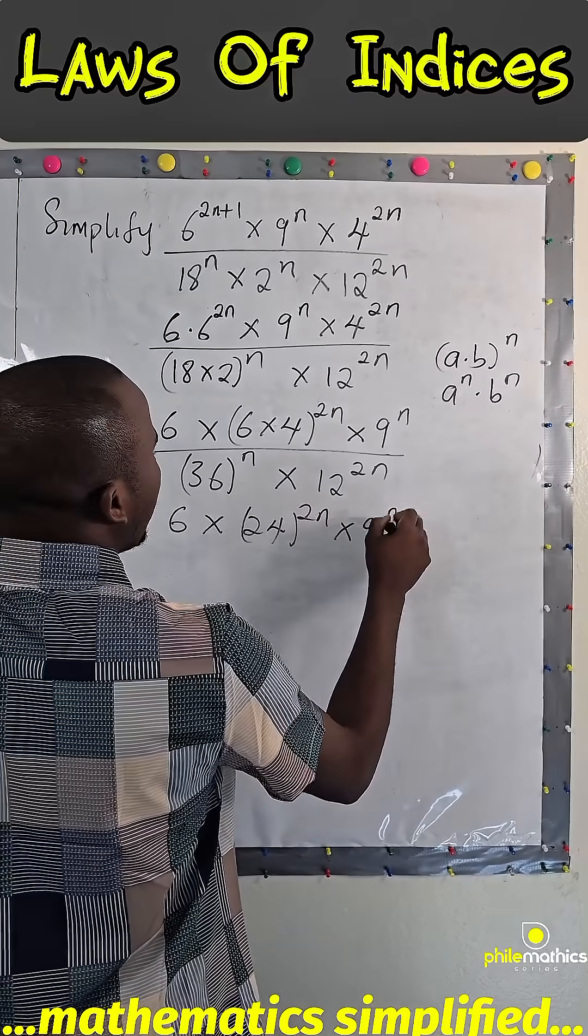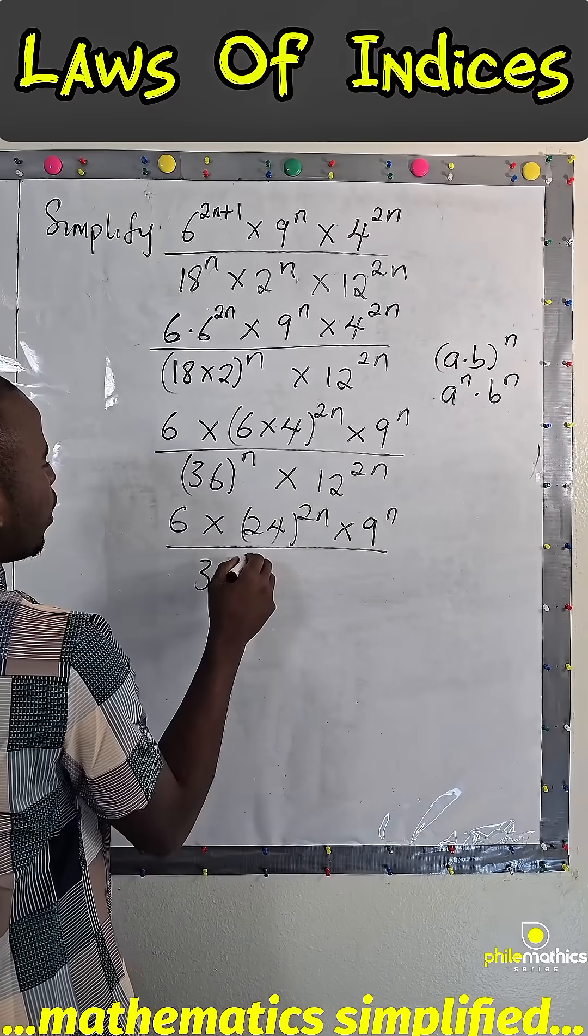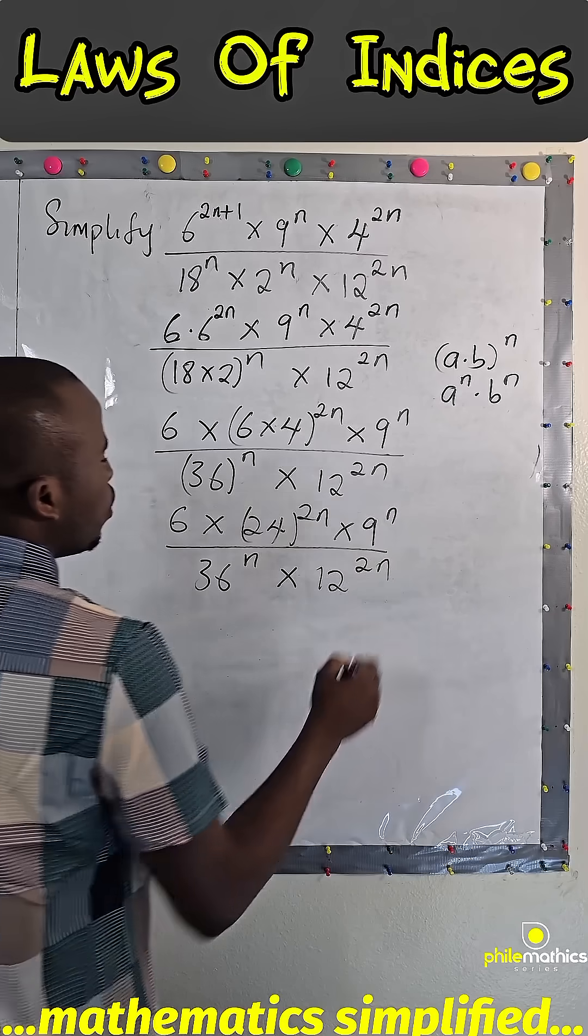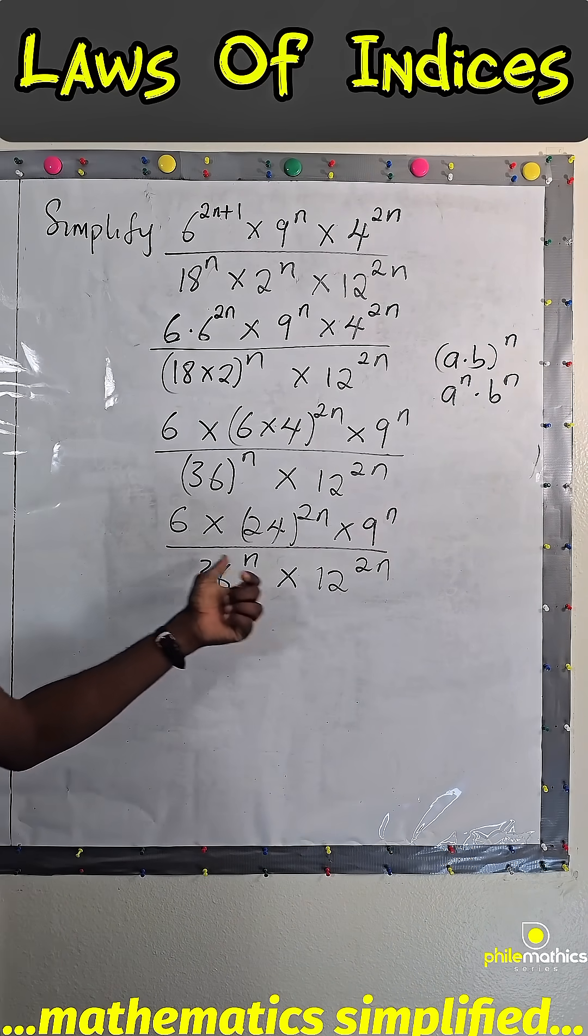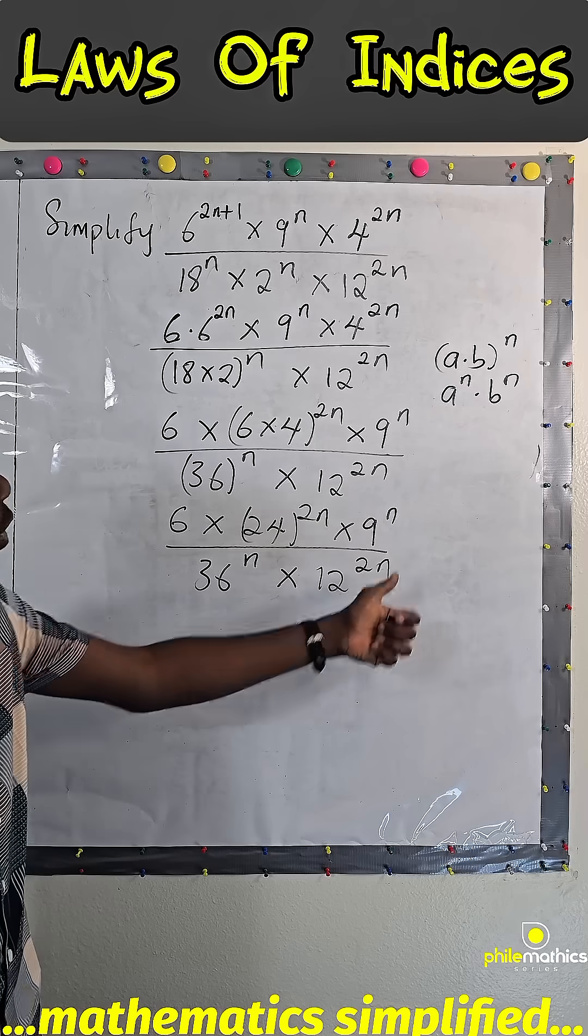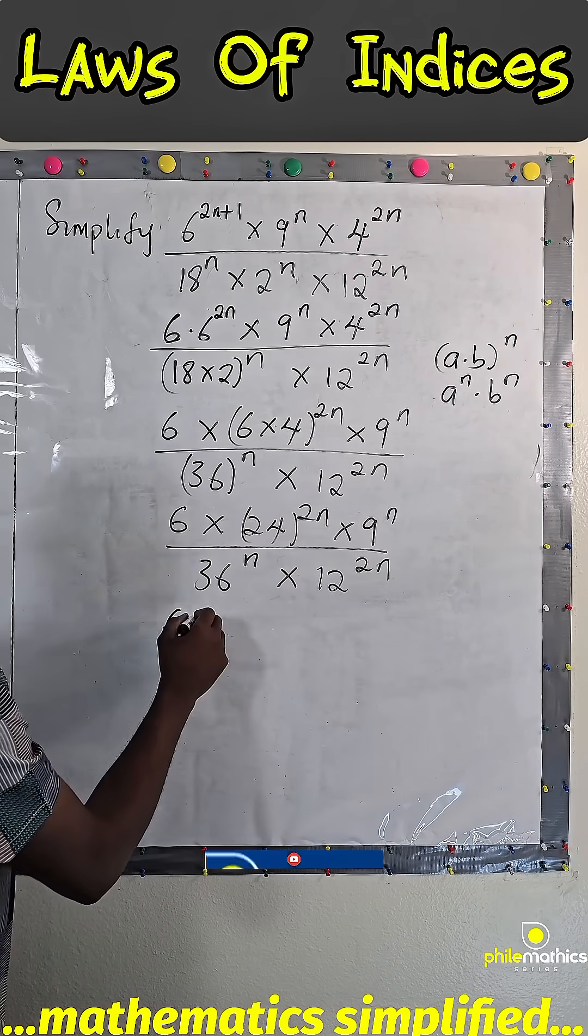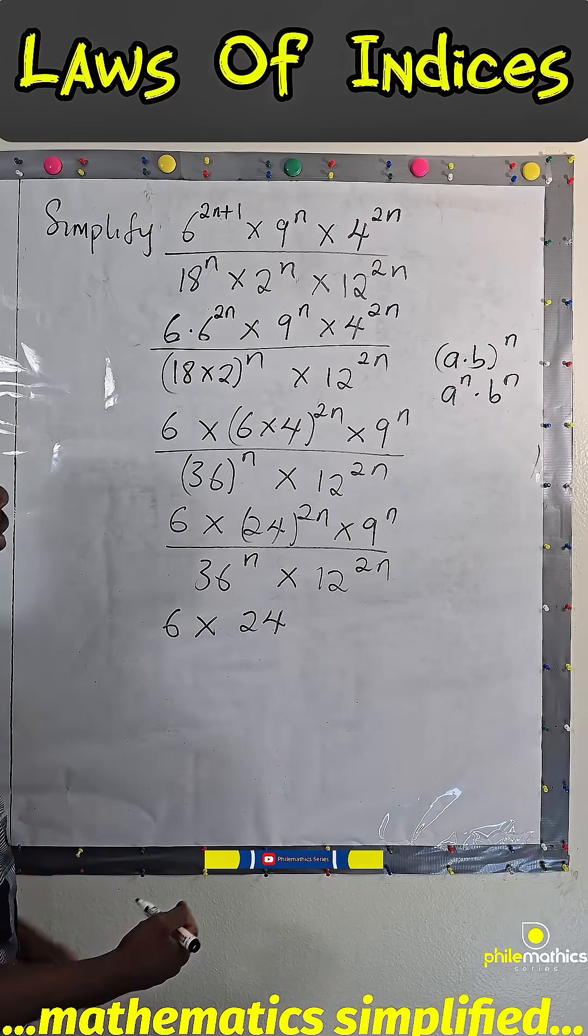times 9 to power n over 36 to power n times 12 to power 2n. You know, in indices when we divide we subtract the powers, so I can divide this individually with the corresponding terms. So I can write as 6 times 24, since both of them have 2 to power n, the same thing